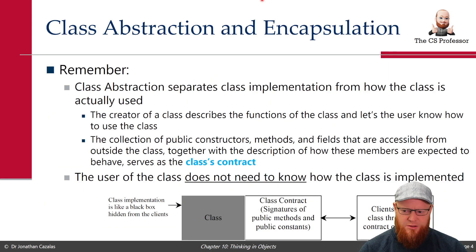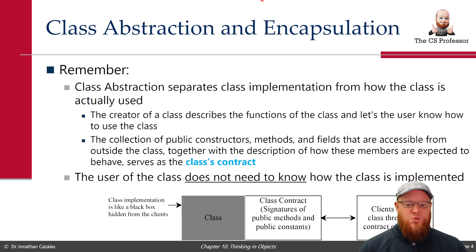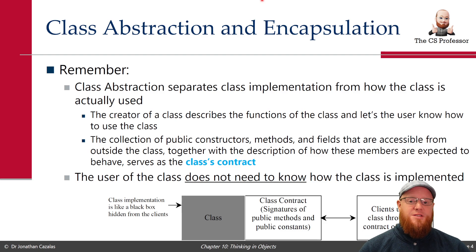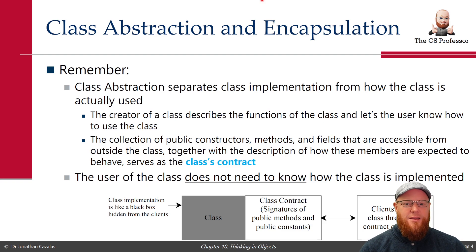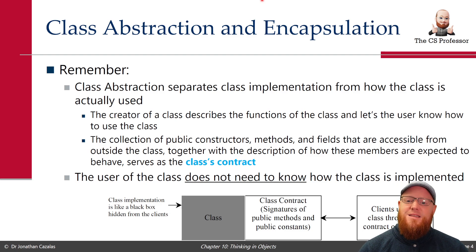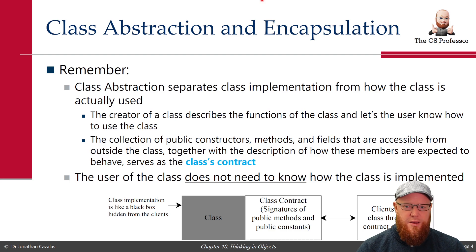Diving right in, reminding us of the idea of class abstraction and encapsulation. Class abstraction is where we separate the implementation of a class from how the class is actually used. You, the designer of a class, will describe the functions of the class, describe how it works, and let the user — maybe the client or customer who's paying you — know how to use and access that class. That collection of public constructors, methods, and accessible data members, along with how those things operate in a holistic sense — that's called the class's contract.